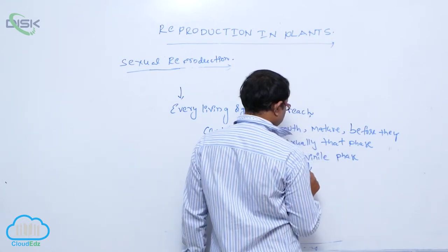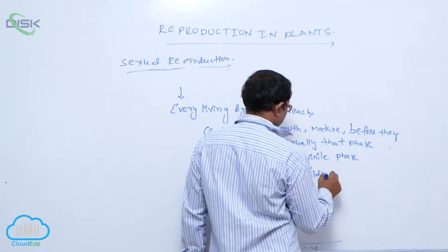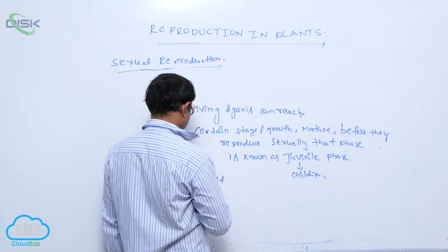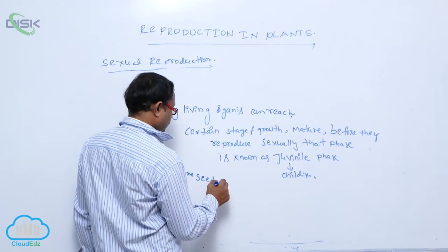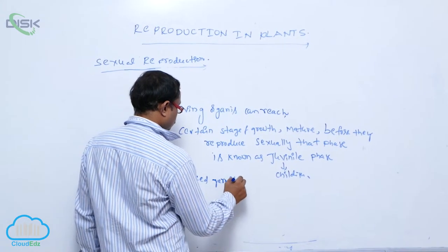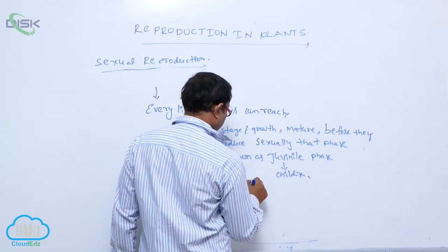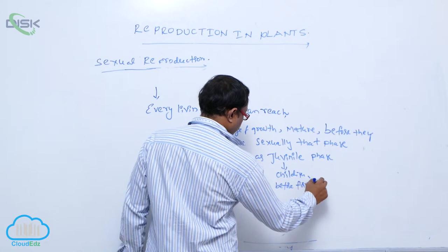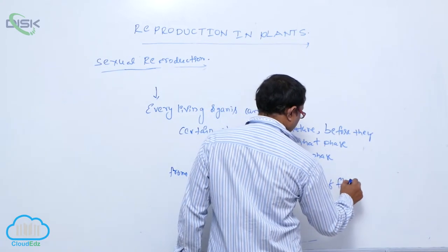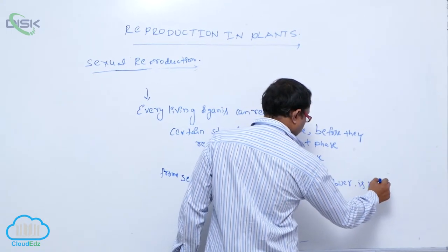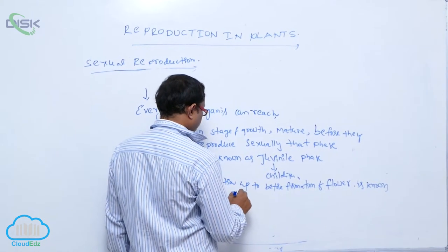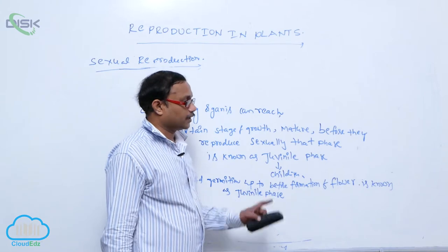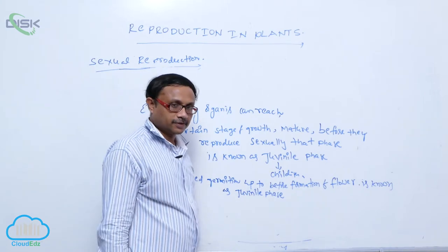Juvenile means it is at a childish phase. For example, in a plant, from seed germination up to before the formation of a flower is known as the juvenile phase.